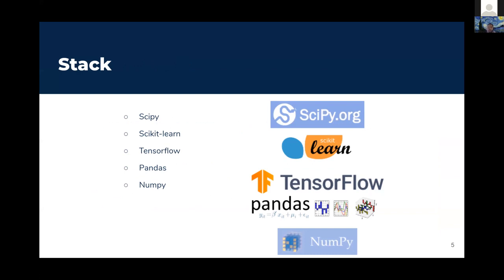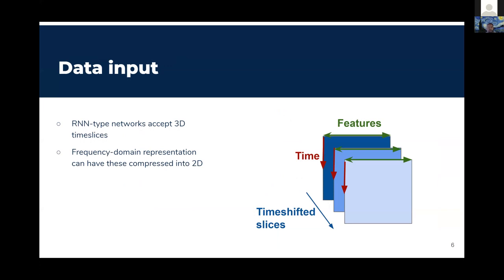The technology stack used is all open source: SciPy, scikit-learn, TensorFlow, pandas, and NumPy. The data input has to be in three-dimensional data cubes because RNN-type networks accept three-dimensional data. With the frequency domain approach, data was compressed into two dimensions. A typical data cube has features running across as columns and time running as rows, with different time slices at a particular shift, where windows can be overlapping or non-overlapping.